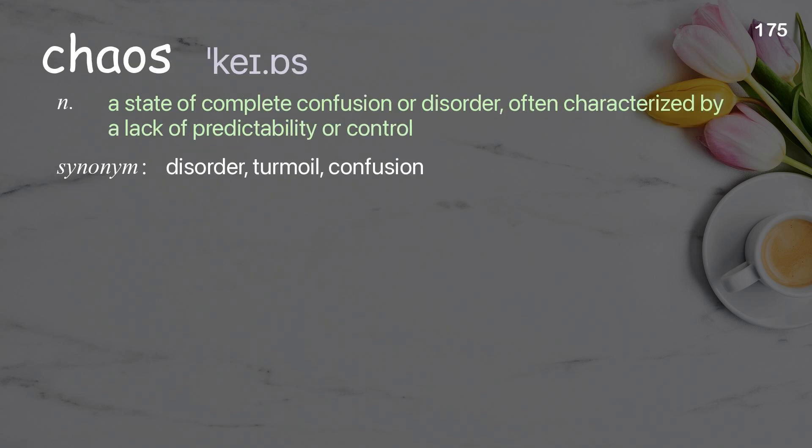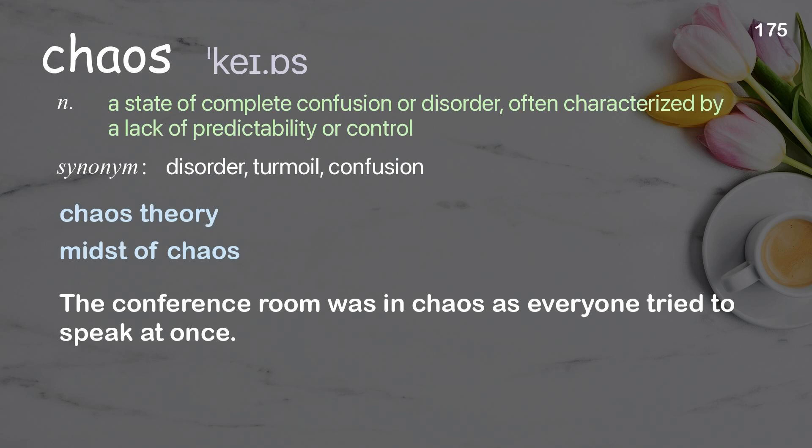Chaos: a state of complete confusion or disorder, often characterized by a lack of predictability or control. Examples: chaos theory, midst of chaos. The conference room was in chaos as everyone tried to speak at once.